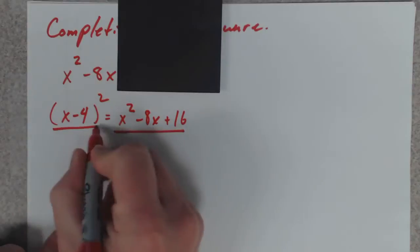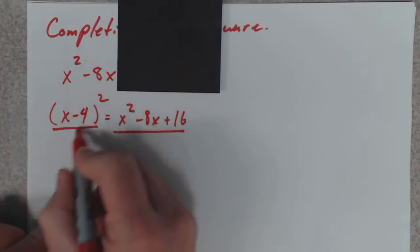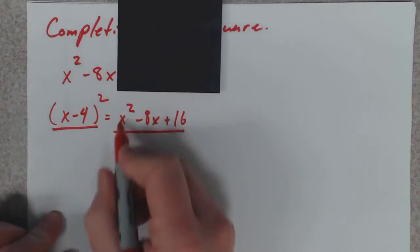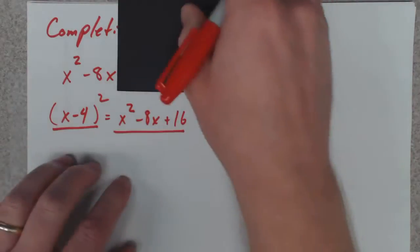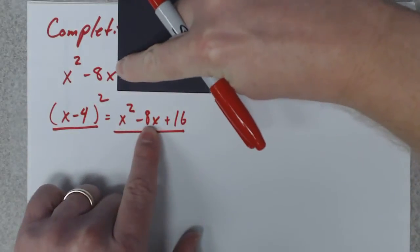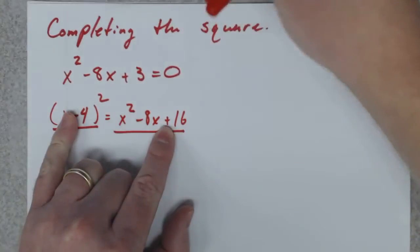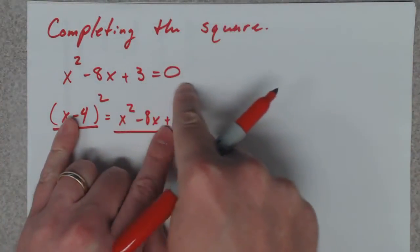This is the same thing as this. So, wrapped up inside these little parentheses is this whole trinomial. So, you've got the x squared. You've got the minus 8x. You've got a 16 here. Well, if you look at the rest of the equation, there's a plus 3 equals 0.